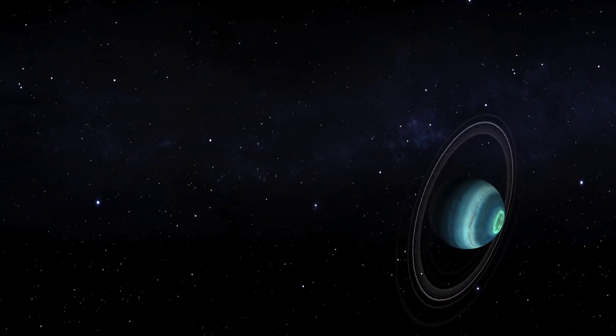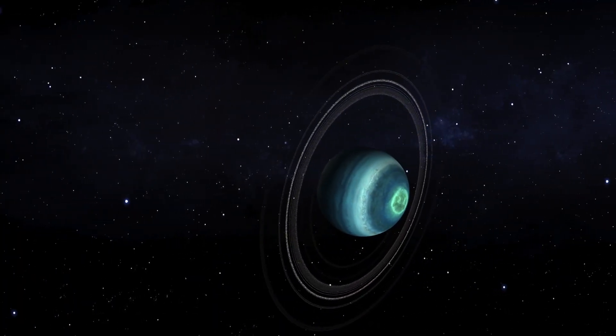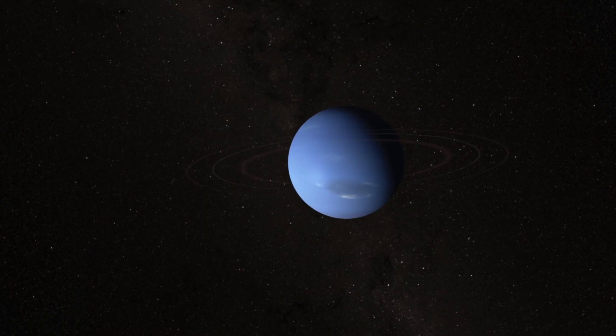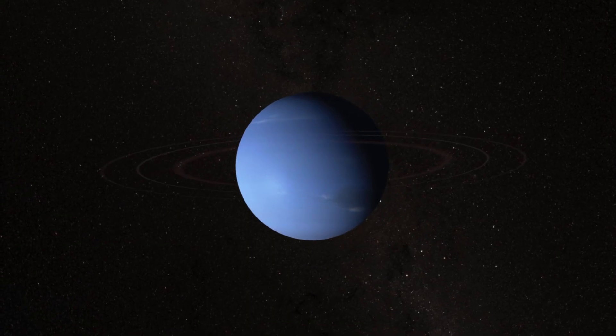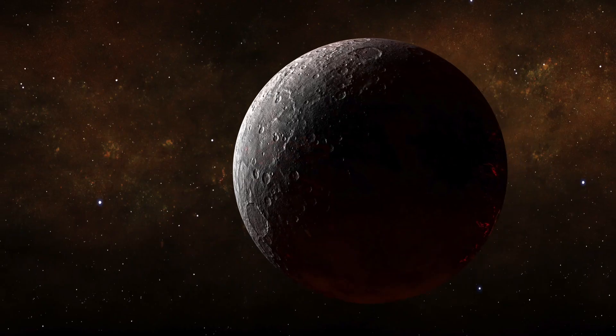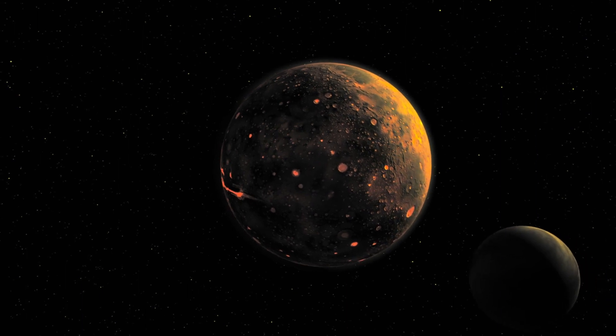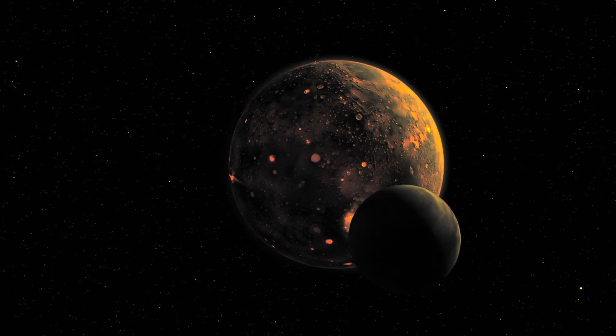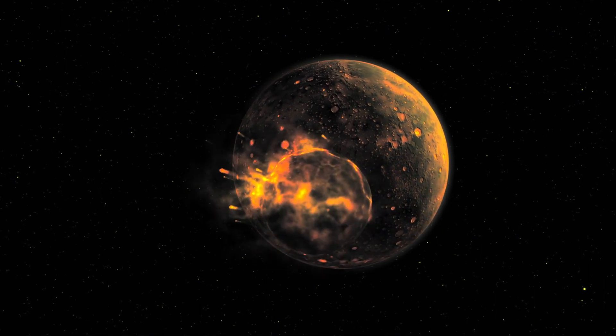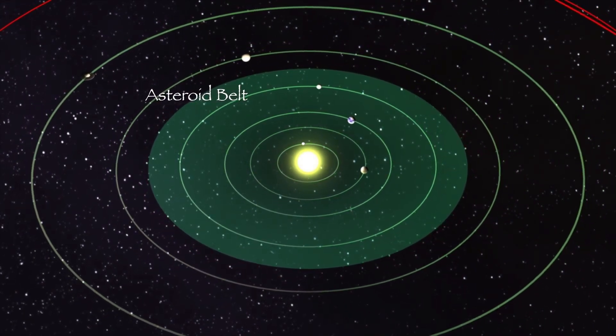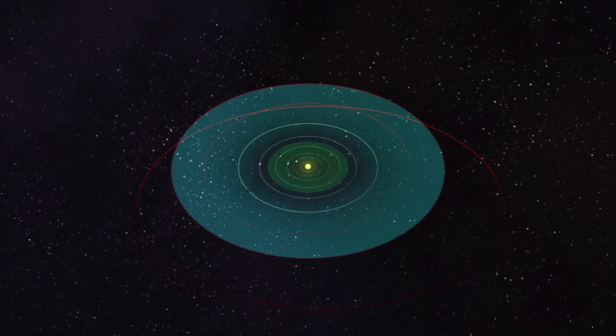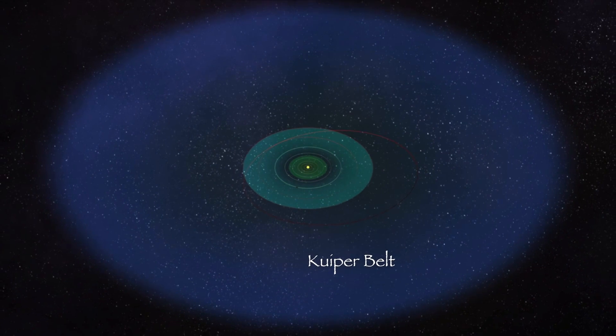Uranus not only has a retrograde spin, it rolls on its side like a bowling ball. At Neptune, the icy moon Triton orbits backwards, opposite from the direction of Neptune's spin. We see evidence in the architecture of the solar system for collisions. We also see in the asteroid belt and in the Kuiper belt that the orbits of these things look like they've been disturbed.